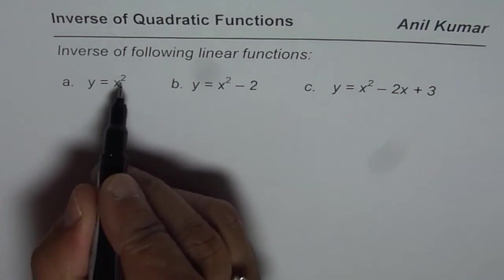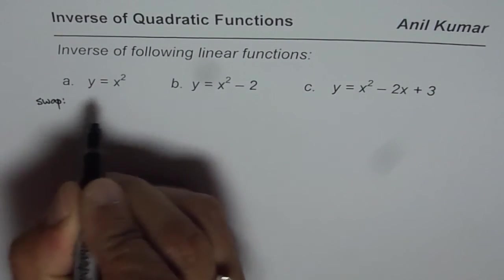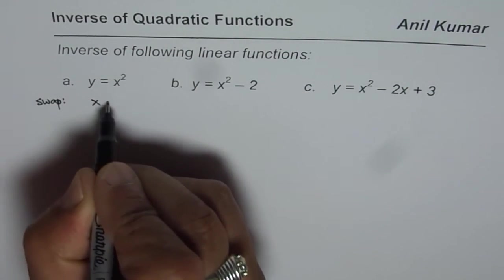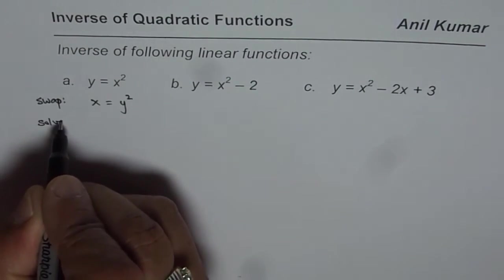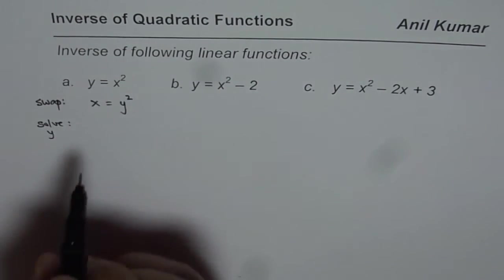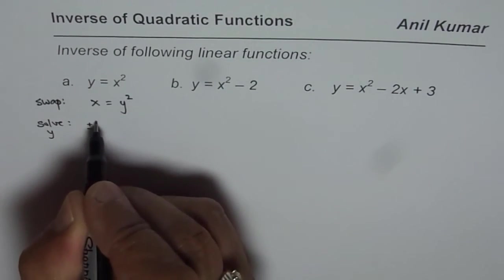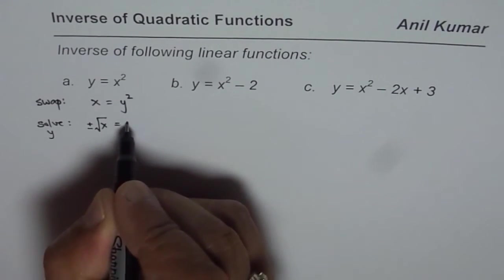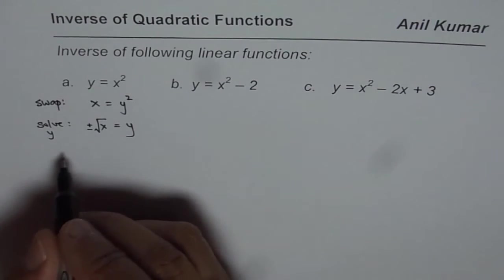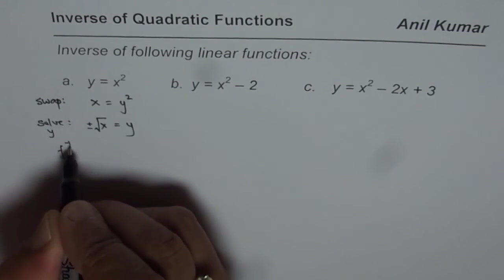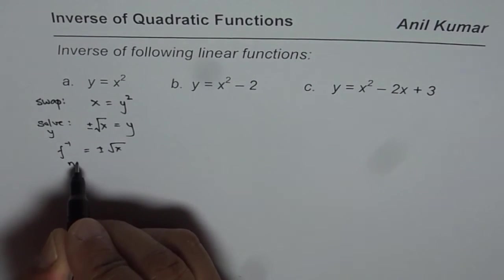Let's do the first one: y equals x squared. When you swap x and y, you get x equals y squared. The next step is to solve for y. Whenever you do a square root you have to include plus and minus, so y equals plus or minus square root of x. Since y has 2 values, the inverse in this case — plus or minus square root of x — is not a function.